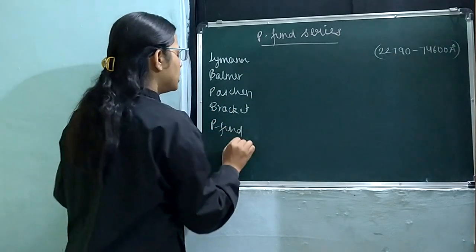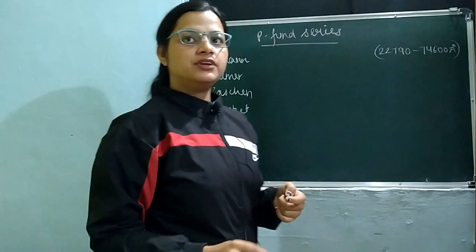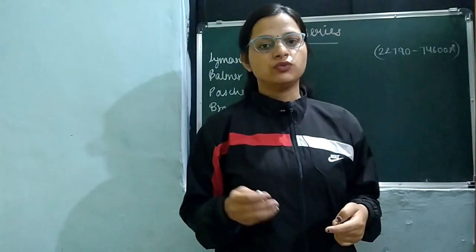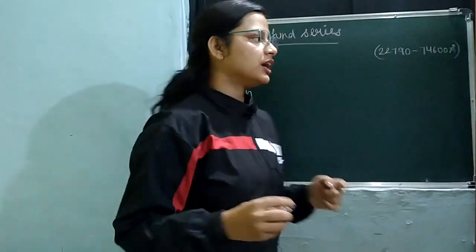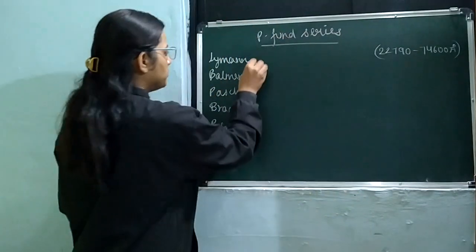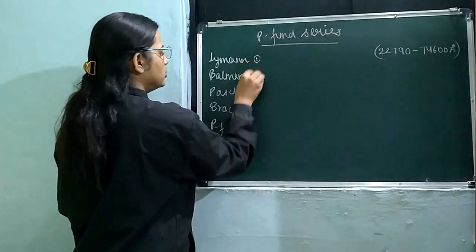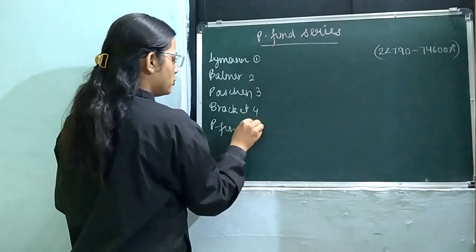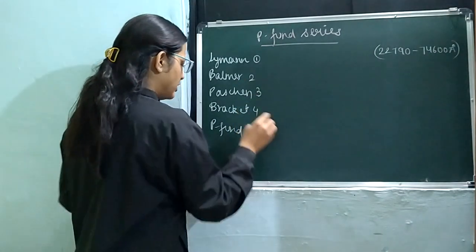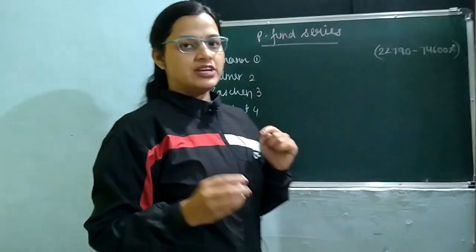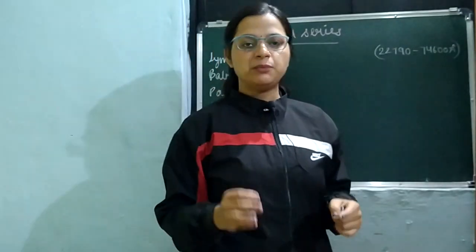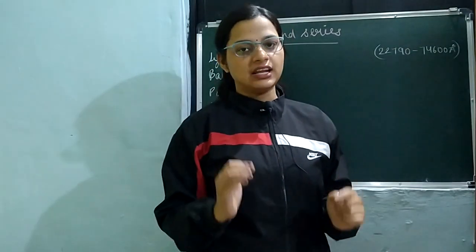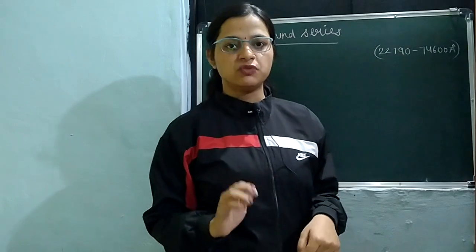If you look at the values of N1: 1, 2, 3 — then the value of N1 is 1, 2, 3, 4, and 5 respectively. So the Pfund series will be the 5th, meaning N1 equals 5.